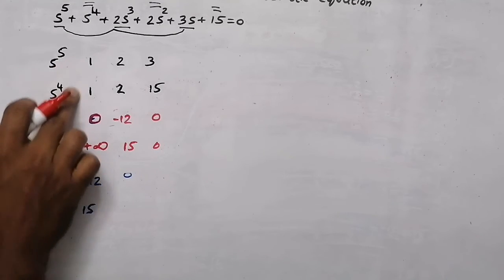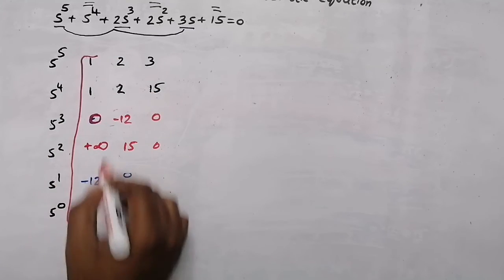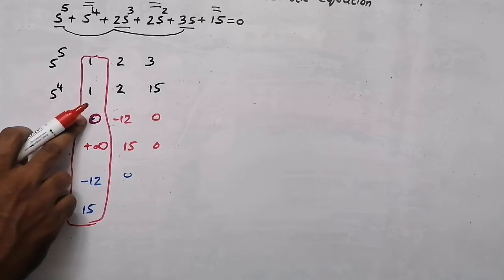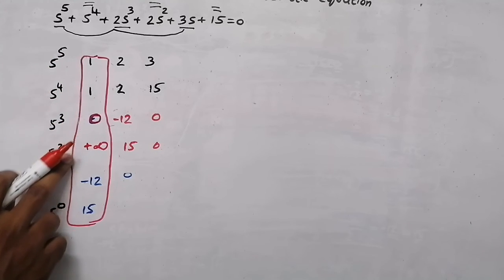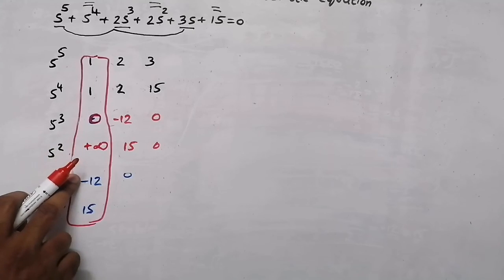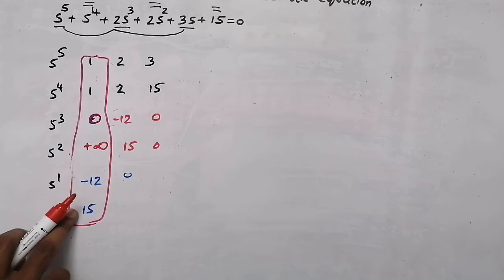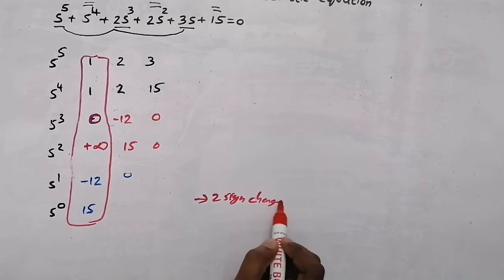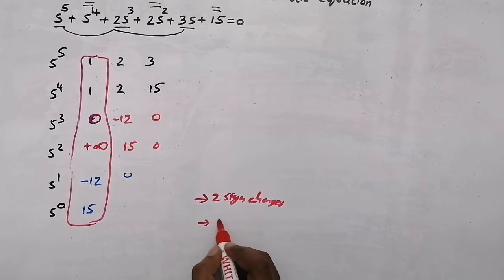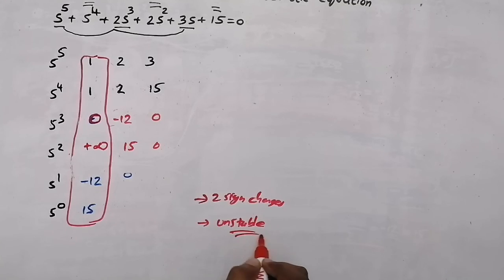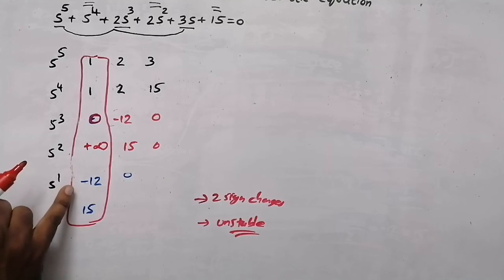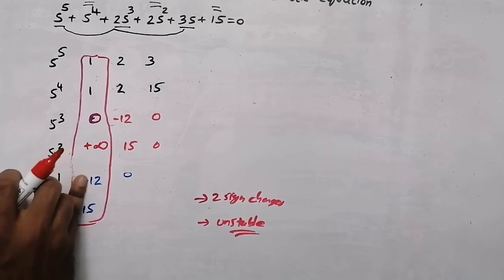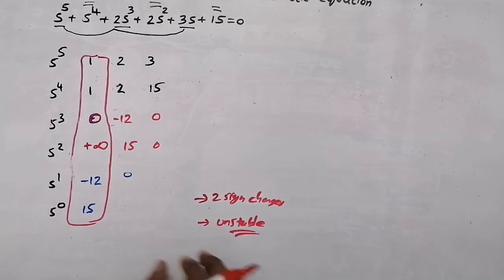When we look at the first column to find the stability: we have a positive value, then positive value, then 0, then again positive value, then negative value — so a sign change occurs here. Then from negative again to positive — so there are 2 sign changes. If there are 2 sign changes, then our system is going to be an unstable system. There is a sign change, therefore it is an unstable system. If we got a positive value there, this system would be stable, but here it is an unstable system.